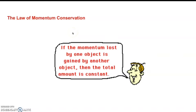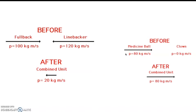So this is the law of conservation of momentum, then. If the momentum lost by one object is gained by another, then the total amount is constant. Always true. So momentum never changes. It's always constant in a collision or in any situation.